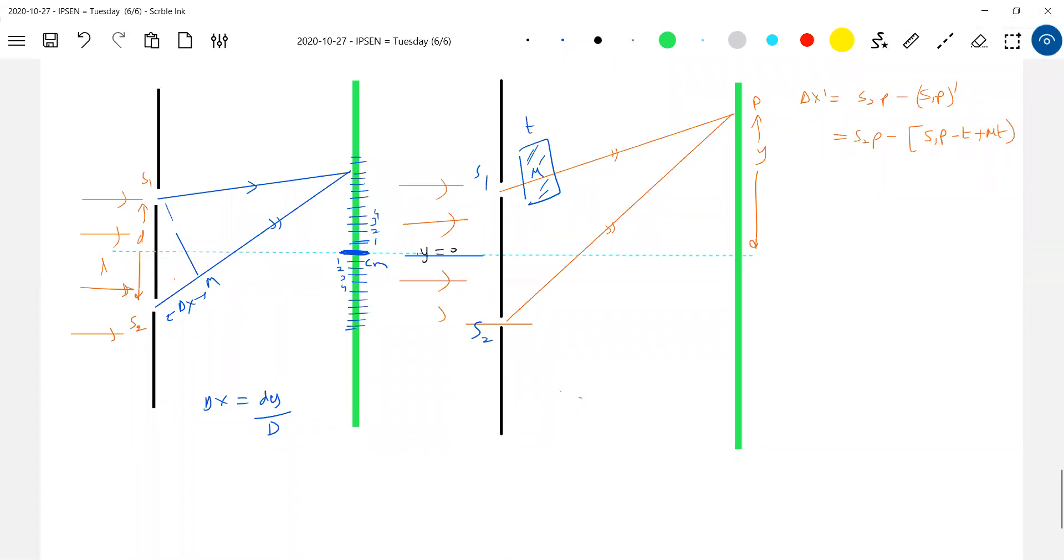Now, what is the meaning of this? S1P minus T is what? Path covered in air. Everything is here. Then what is mu T? It will cover a length T in slab, optical path length mu T.